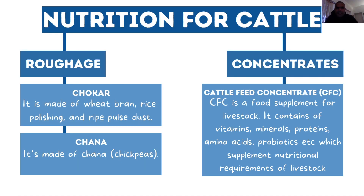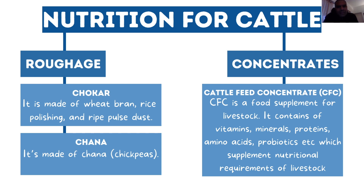For cattle nutrition, we normally feed them grass and some form of fiber, which we call roughage. Other than roughage harvested from the land around, we might add supplements like choker. When we polish rice and wheat we remove the outer surface, and that is called choker - you can buy it in sacks and feed it to cattle.